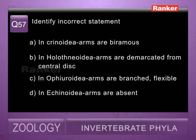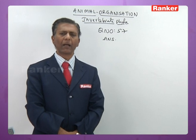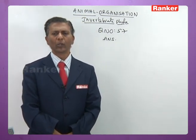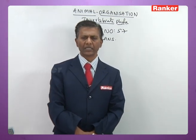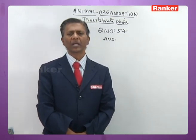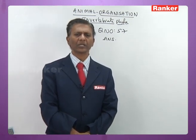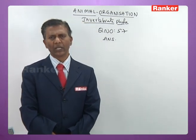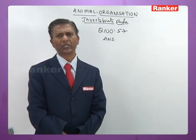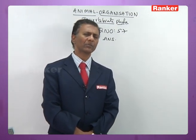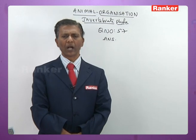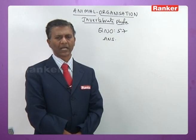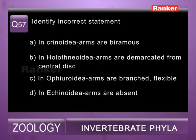Question fifty-seven: identify the incorrect statement — a) in Crinoidea arms are biramous and dichotomously branched (correct), b) in Holothuroidea arms are demarcated from central disk (wrong — Holothuroidea have no arms at all), c) in Ophiuroidea arms are branched and flexible (correct — basket stars have branched arms, other ophiuroids have highly flexible arms), d) in Echinoidea arms are absent (correct). So fifty-seventh question correct answer is b.